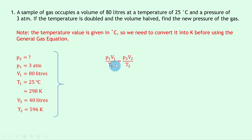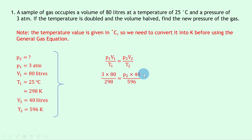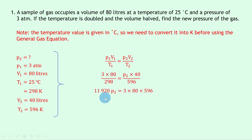Writing down the general gas equation: p1·v1 / t1 = p2·v2 / t2. Substituting in the numbers gives us (3 × 80) / 298 = (p2 × 40) / 596. To get rid of the fractions we cross multiply — the top right times the bottom left equals the top left times the bottom right — and simplifying both sides gives us 11920·p2 = 3 × 80 × 596.